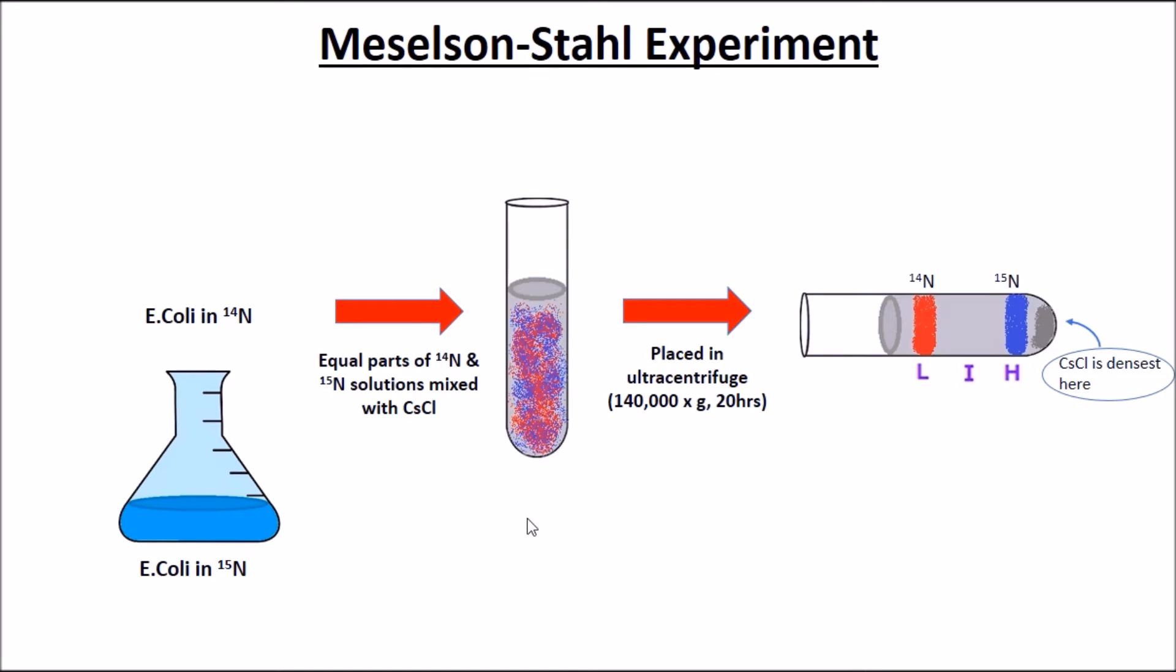The Meselson-Stahl experiment had the aim of distinguishing old and new DNA strands, so two strands of DNA were labeled with different isotopes. E.coli was grown in the presence of the N15 heavy isotope and the N14 light isotope. When these are centrifuged, we can see how the strands separate on the basis of their density.